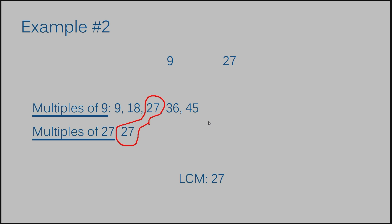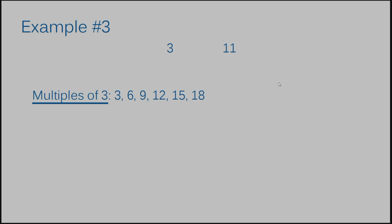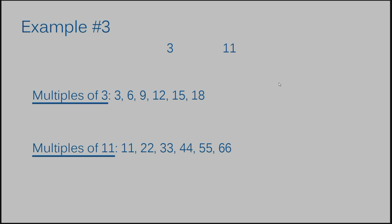Let's move on to example number three. We need to find the least common multiple for three and 11. The first few multiples of three are 3, 6, 9, 12, 15, and 18. The first few multiples of 11 are 11, 22, 33, 44, 55, and 66.